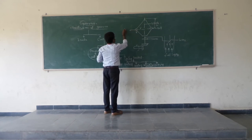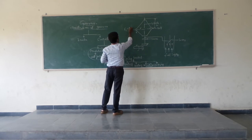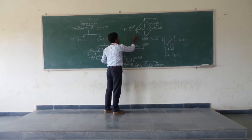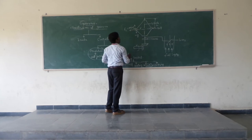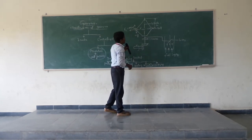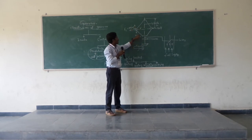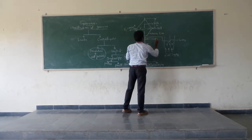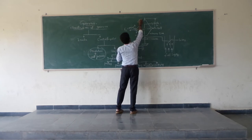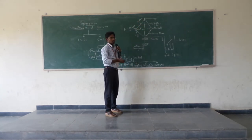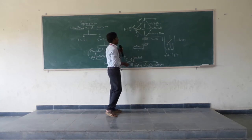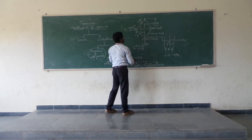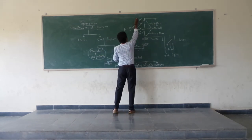The upward centrifugal force Fc acting on the balls is equal to m·r·ω². The downward force is m·g, where m is the mass of the ball. When the sleeve moves upward and downward, it acts on the lower links and upper links, creating tensions T1 and T2 in the respective links.